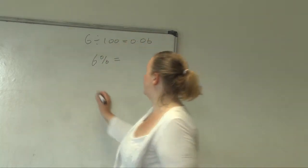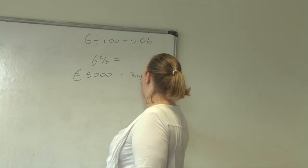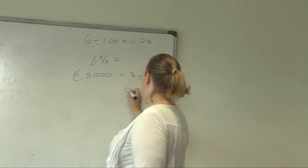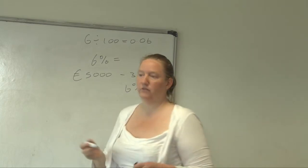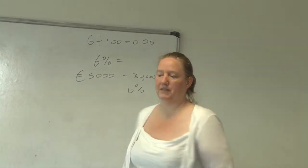So, you're investing 5,000 for three years at 6%. That's the first thing to do is glean the information you have. Money, the amount of time, the percentage.